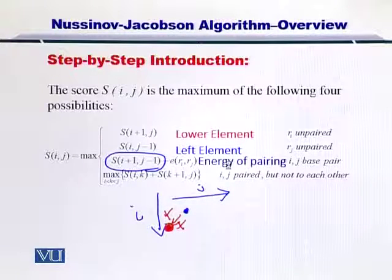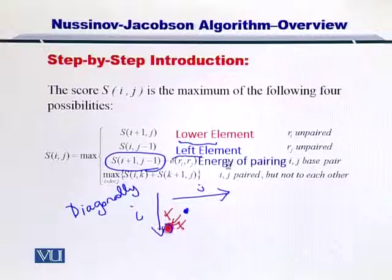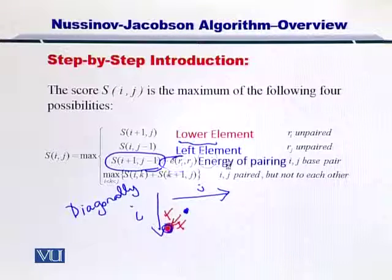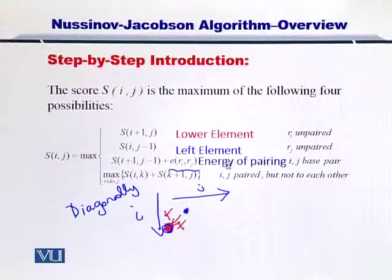So now we have three elements: one was the lower element, the second was the left element, and the third is the diagonally located element. But the diagonal element, if it is matching and coupling with the nucleotide, then you have to consider the energy that is released as a result of the formation of the hydrogen bond. That is represented here by E.